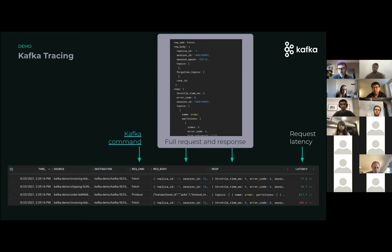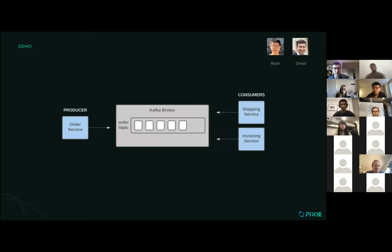On the right, we have the request latency — this is the latency at the protocol level, so it's individual messages from the client to the server. If there are any issues, you can monitor the latencies. While it's great that we can trace all the messages, the real question is: how can you use this stuff to actually debug real issues with Kafka or any sort of message bus system?